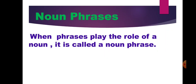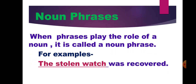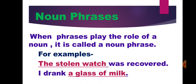First is noun phrases. When a phrase plays the role of a noun, it is called a noun phrase. Example: 'The stolen watch was recovered.' The phrase 'the stolen watch' — the word watch is a noun, and it is used as its head word, so this group of words is a noun phrase. Another example: 'I drank a glass of milk.' In this sentence, 'a glass of milk' — the word milk is used as a noun, as its head word, so this is a noun phrase.